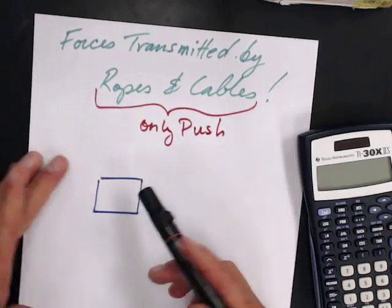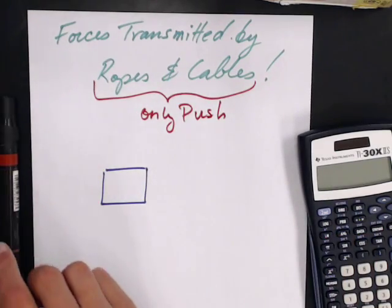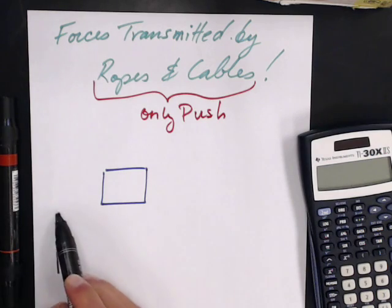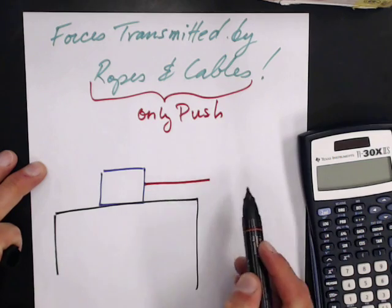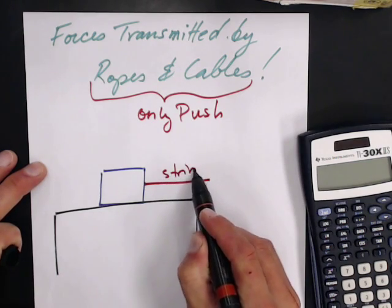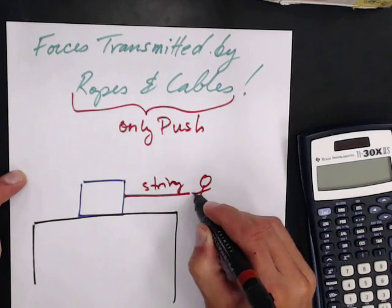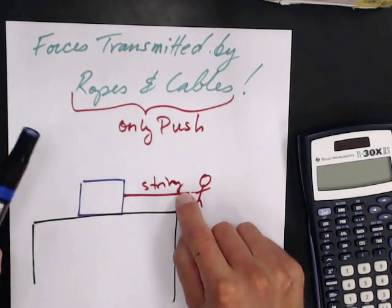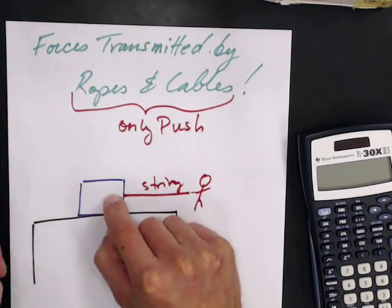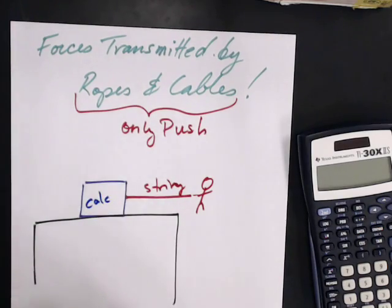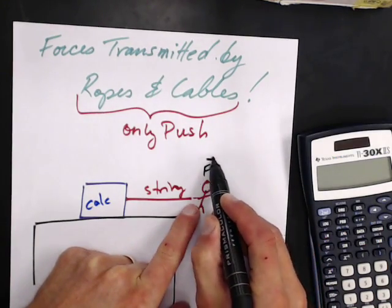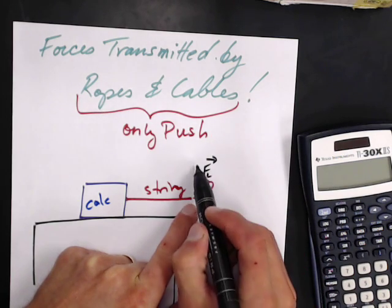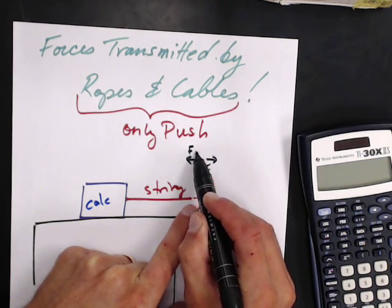So when we have our calculator here sitting on top of my table, and I have my string attached to it, and here's micro me pulling it, the force of me pulling on the string is transmitted to the calculator. It's really just a giant Newton's third law pair. So I pull on the string — the force of LUBS is pulling the string this way, and the string pulls back on me that way.